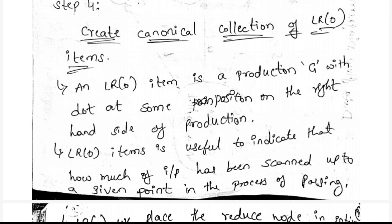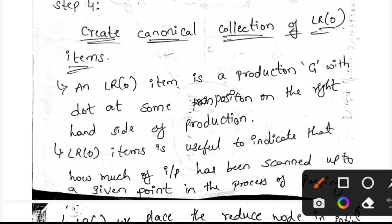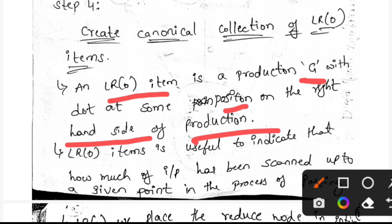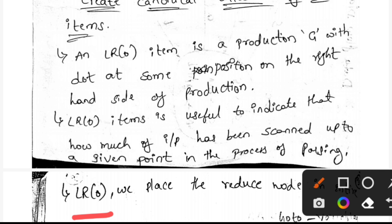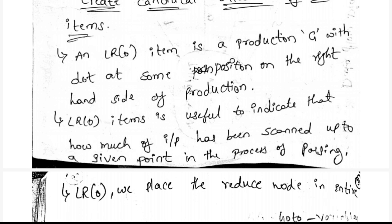In step four, we create the canonical collection of LR(0) items. An LR(0) item is a production of G with a dot at some position on the right-hand side of the production — we add a dot to the production rules. LR(0) items indicate how much input has been scanned at a given point in parsing. In LR(0), we place the reduce entries in the entire row of the parsing table.